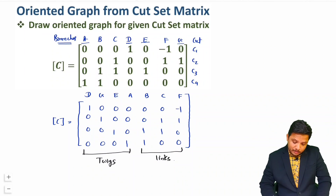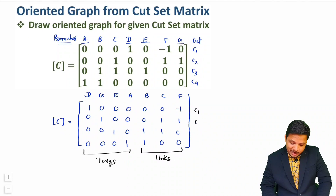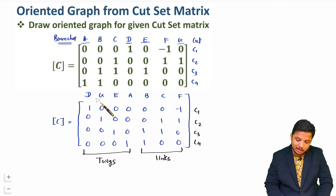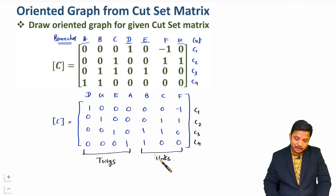Now here cut set-wise there is no issue — it will be in that order: 1, 2, 3, and 4. But now the branches are reordered as per twigs and links.